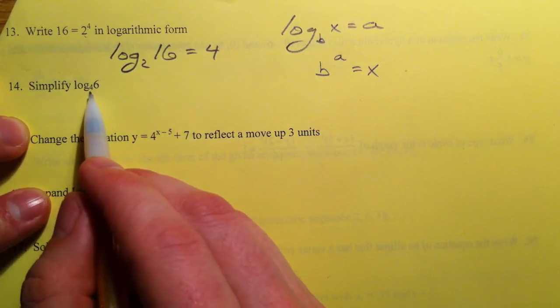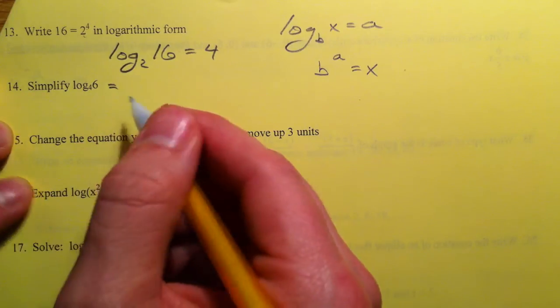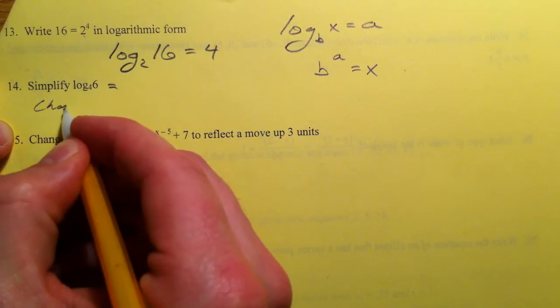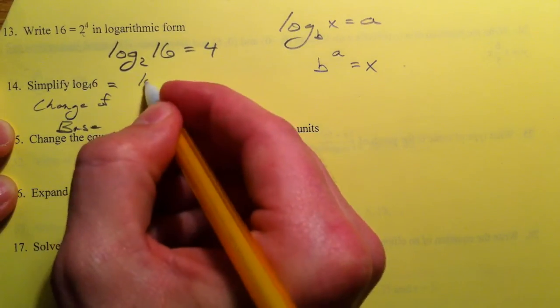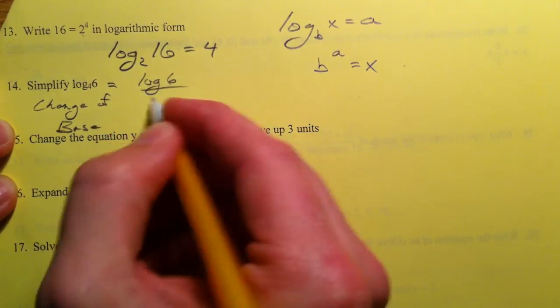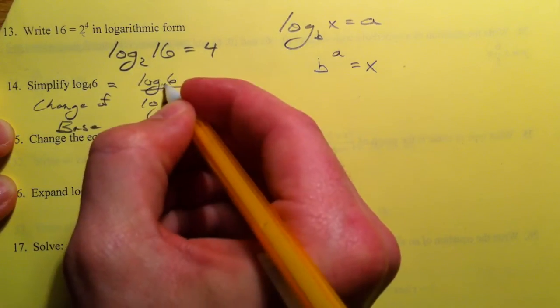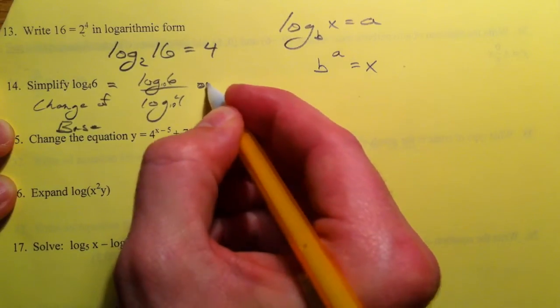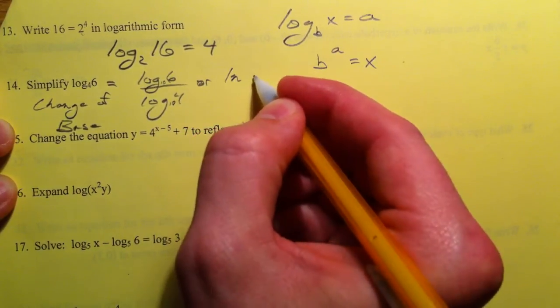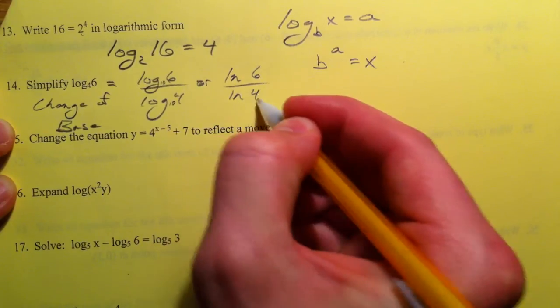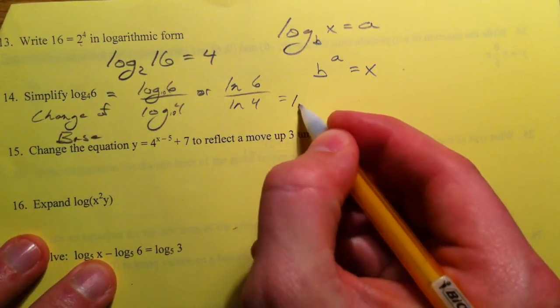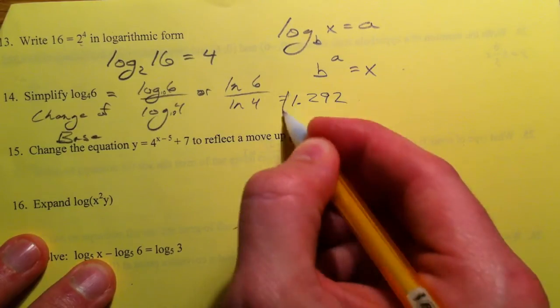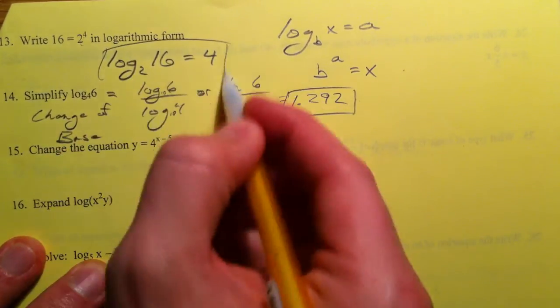To simplify log base 4 of 6, we actually have to use the change of base formula. What we can do is we can change it to the common log: log 6 divided by log 4. Or you can do ln of 6 over ln of 4. Either one will give you 1.292. And there you have it.